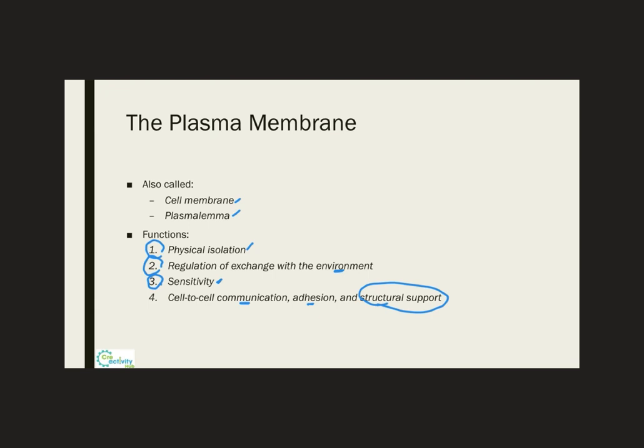And lastly, we have the cell-to-cell communication, adhesion, and structural support. So for the cells to be able to communicate with each other, they need to be close by to each other, in proximity, and this proximity is set by specialized connections between neighboring cell membranes or even between the plasma membrane and the extracellular materials. And by keeping them all together, it will also give that structural support that is important to the stability of a tissue. Remember that when several cells come together, they will form a tissue.